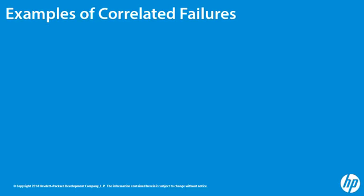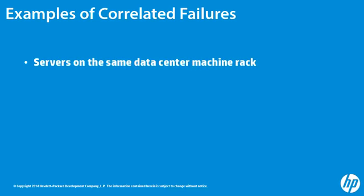The following correlated failure types can help you decide if you should define Fault Groups. If you have servers on the same data center machine rack, power loss to that rack could cause all nodes on those servers to fail. User error during machine maintenance could also affect an entire machine rack.